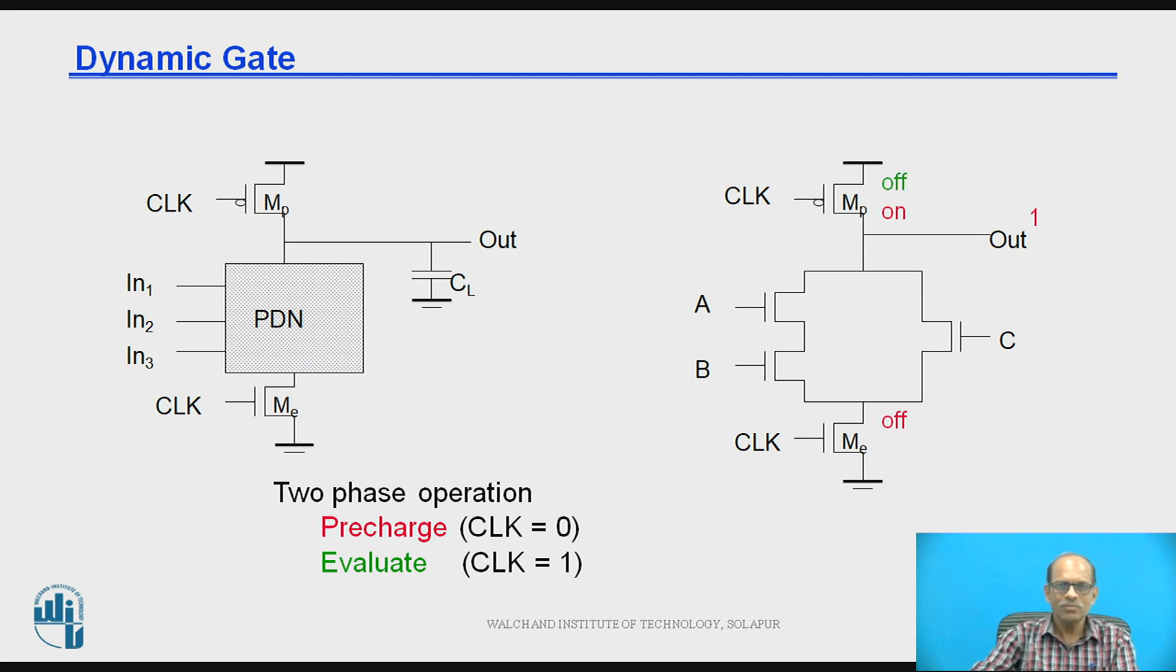Now in the evaluation phase, when clock becomes 1, the PMOS will become off and this NMOS will become on and the output is evaluated. Now for this particular circuit shown, the output is A and B and whatever we get, it is OR with C and take complement of that because this is a pull-down network. So A and B or C and complement of that, so that is the output.